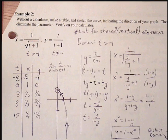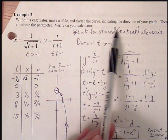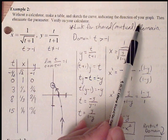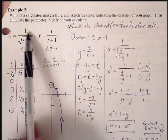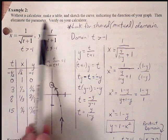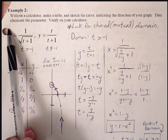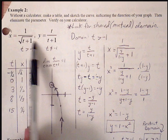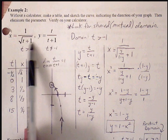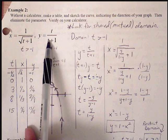Let's look at a couple of examples here. Example 2. Without a calculator, make a table, sketch a curve indicating the direction of your graph, then eliminate the parameter. So first off, let's look for our domain. Our domain will be the shared domain. So basically, we're looking for the more restrictive of these two domains.